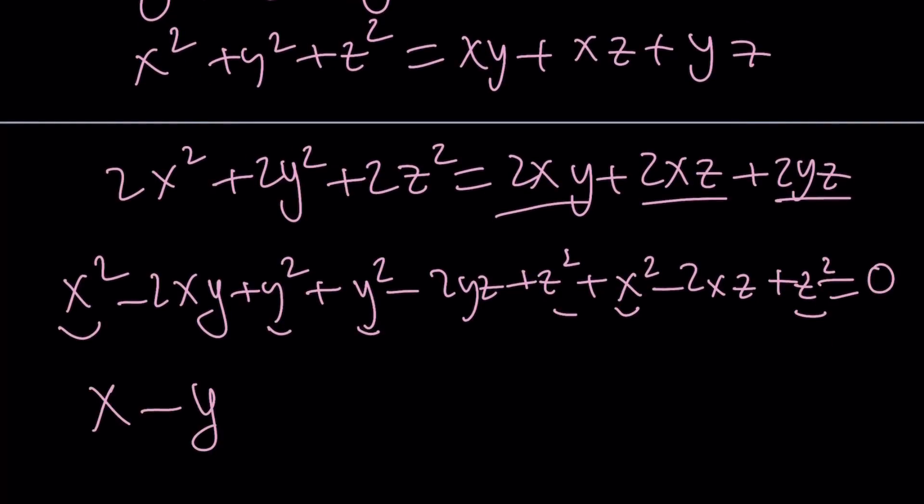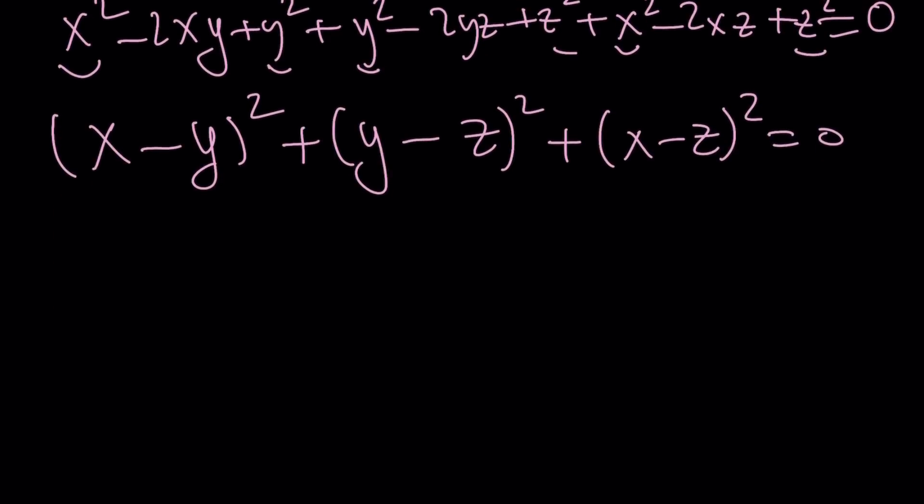This is sum of perfect squares, and that is just perfect. Because math is perfect. Math is amazing. Math is love. So what is that supposed to mean for real numbers? This means all of these are 0. That means x equals y equals z.